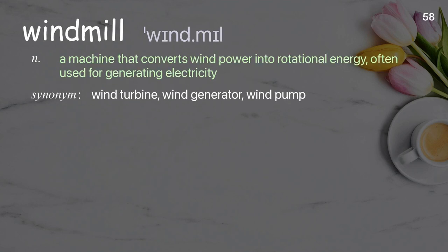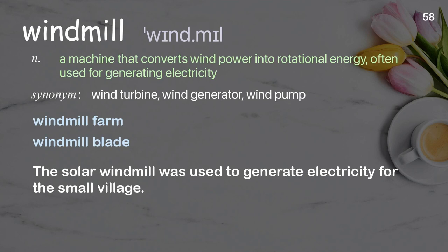Windmill: A machine that converts wind power into rotational energy, often used for generating electricity. Examples: Windmill farm. The solar windmill was used to generate electricity for the small village.